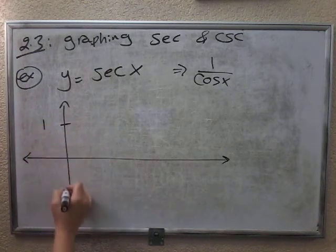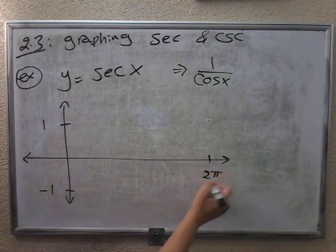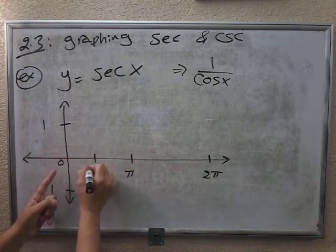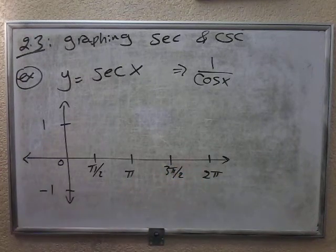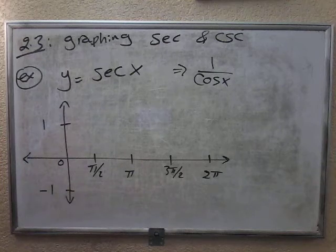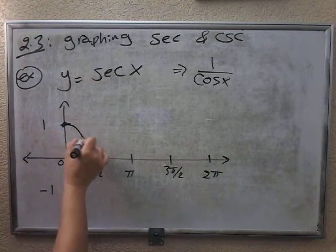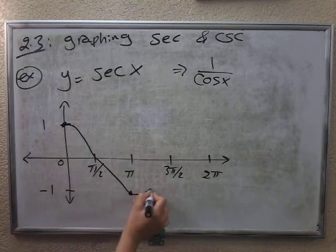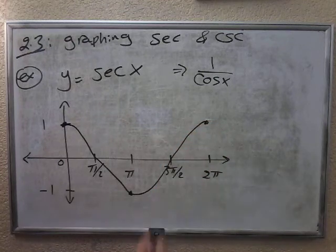We know that cosine starts from 1, alternates between 1 and negative 1, and the whole cycle takes 2 pi. Break it in half — it's pi. Break that in half — it's pi over 2. Break that in half — that's 3 pi over 2. So cosine starts from 1, passes through pi over 2, goes to pi, goes up again, and then goes to 1 again. That's the graph of cosine.